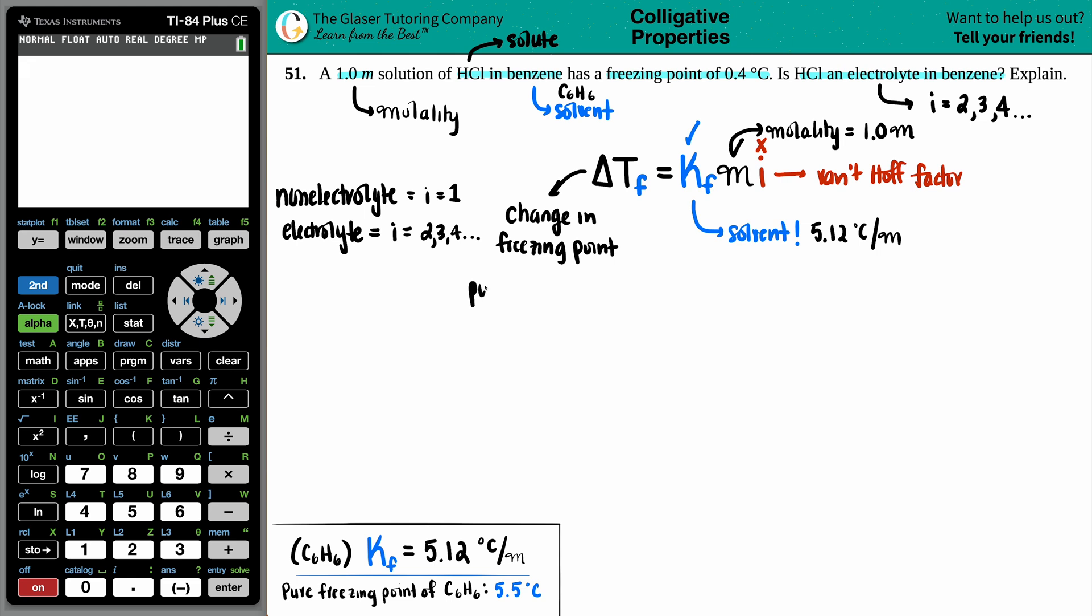So what was that change? The pure freezing point without anything is 5.5 degrees Celsius, and I'm going to subtract that from the solution freezing point of 0.4. The change between those two numbers is 5.1 degrees Celsius.